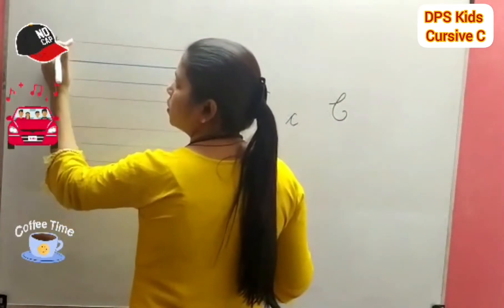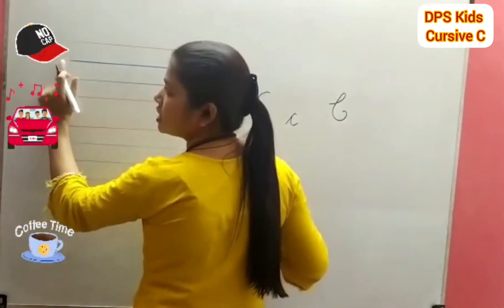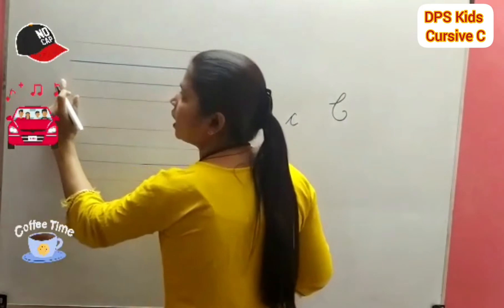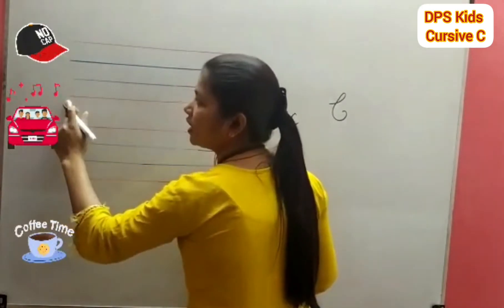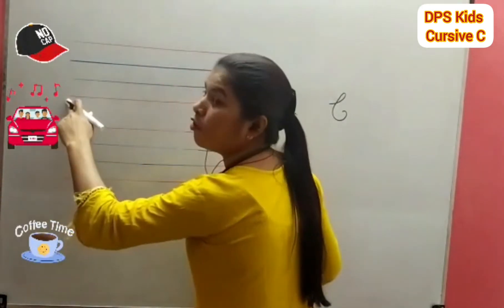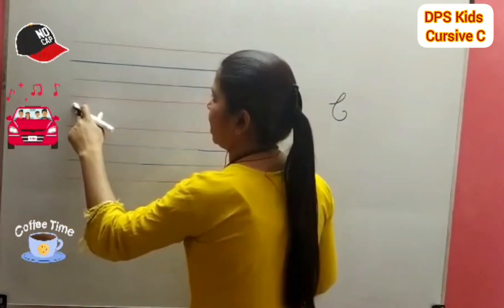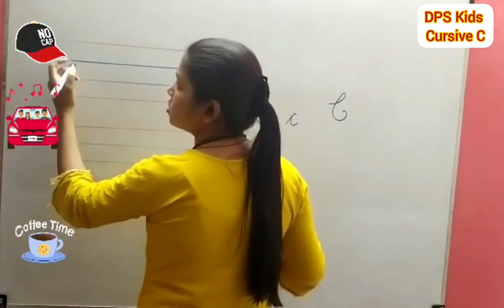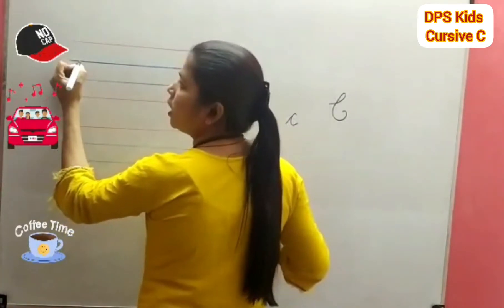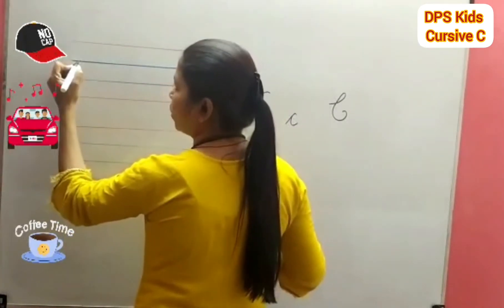Now this is your red line, this is your second blue line, this is your third blue line, and this is your fourth bottom red line. You have to start from the second blue line.